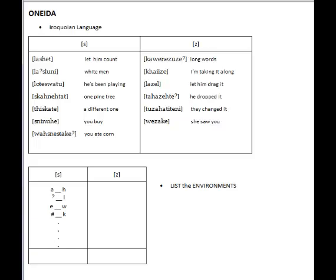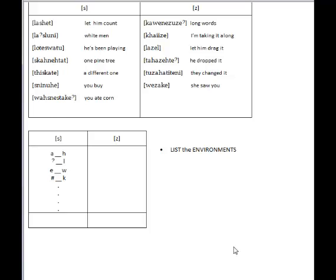But back to the problem. Here's the data set for the Iroquoian language. The suspicious pair of phones we're looking at are S versus Z. Just as we do in any problem, the first thing we do is look for minimal pairs. We go through the data set and have a quick scan and see that none of these words are at all like each other. So the next thing we do is list out the environments, in the hopes that we will find some near-minimal pairs. Listing out the environment requires going through each word one by one, finding all instances of the suspicious phones and listing the immediate phonetic environment — what comes immediately in front and what comes immediately after.